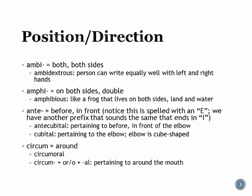Ambi and amphi sound very alike and they mean virtually the same thing: both, both sides, double. Ambidextrous means somebody can write as well with the left as the right hand. Amphibious — think of a creature like a frog that can live on both sides, both water and land, at some point in its life.